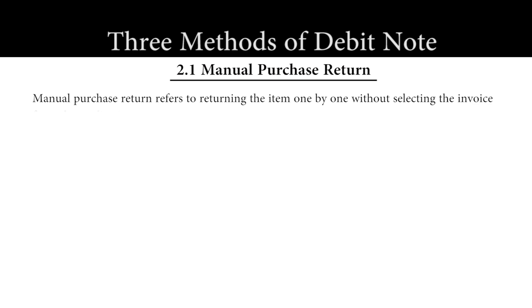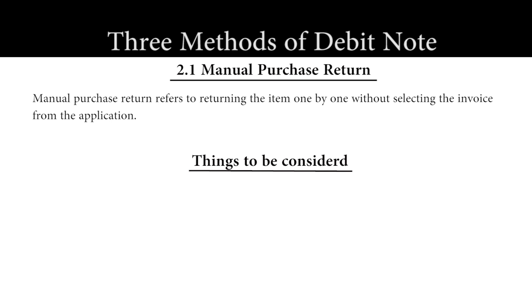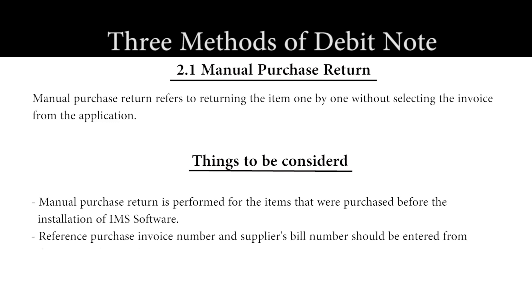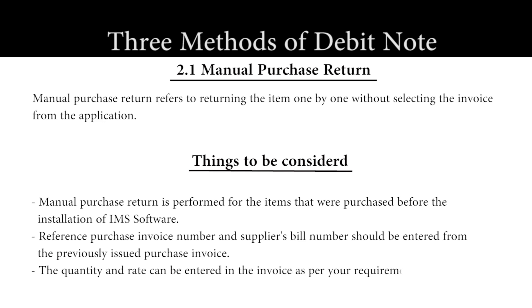Generally, we have three methods of Debit Note. The first one is to do a Manual Purchase Return, which refers to returning the item one by one without selecting the invoice from the application. Manual Purchase Return is performed for items purchased before the installation of IMS software. The Reference Purchase Invoice Number and Supplier's Bill Number should be entered from the previously issued purchase invoice, and the quantity and rate can be entered as per your requirement.